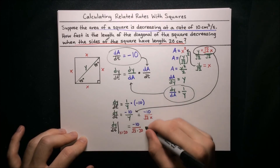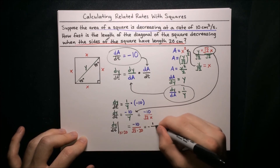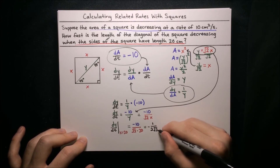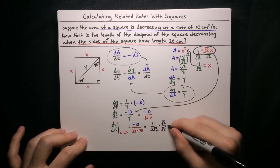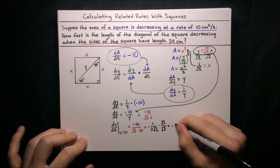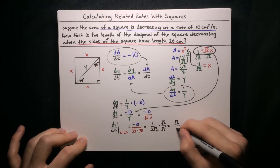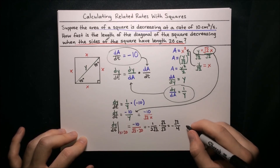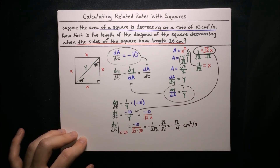Let's clean up this answer. Negative 10 over 20 is just one half, so this becomes negative 1 over (2 root 2). Rationalizing by multiplying by root 2 over root 2, we get negative root 2 over (2 times root 2 times root 2), which is negative root 2 over 4. The units are centimeters per second since y is a length and t is a time. Our negative result for dy/dt makes sense because the diagonal is in fact decreasing.